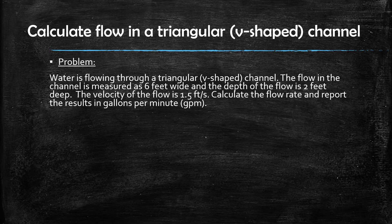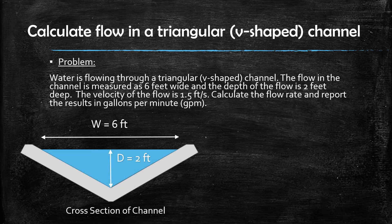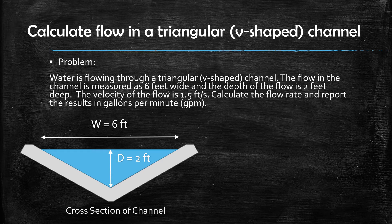Before we get started, let's talk for a minute about the physical problem that we are solving. Here is a cross-section of the channel with the dimensions labeled. We can see here that the width of the flow is 6 feet and the depth of the flow in the channel is 2 feet.